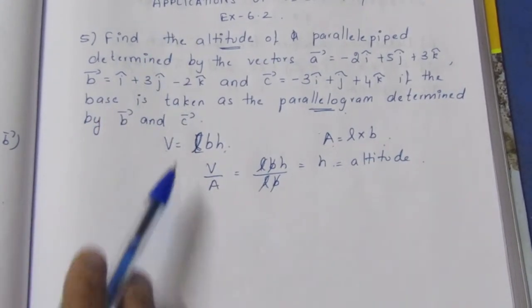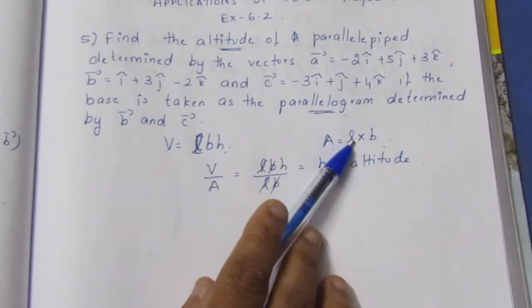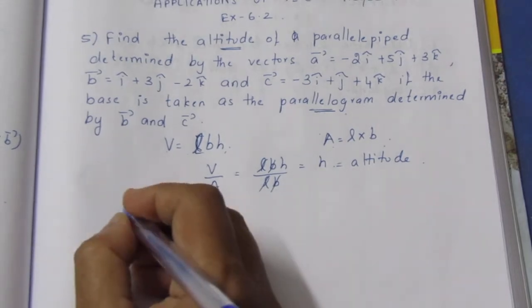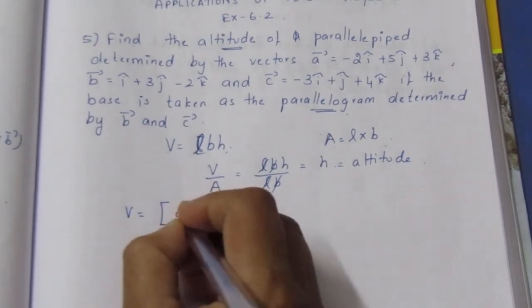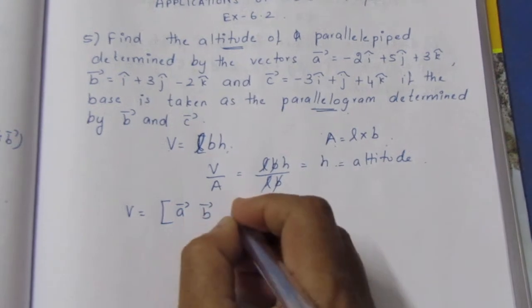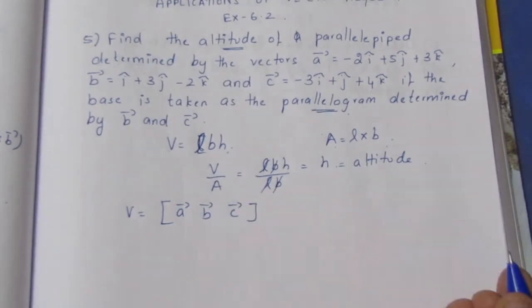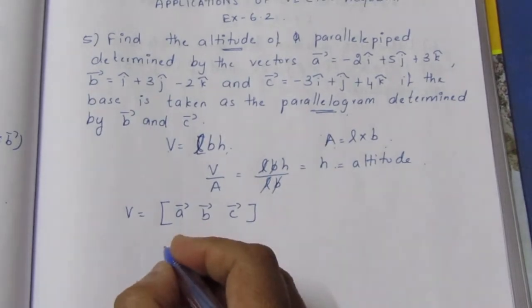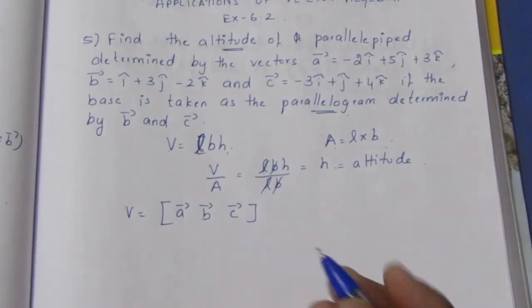Volume is the box bracket, the scalar triple product of ABC vectors. The scalar triple product equals the determinant value of the three vectors.